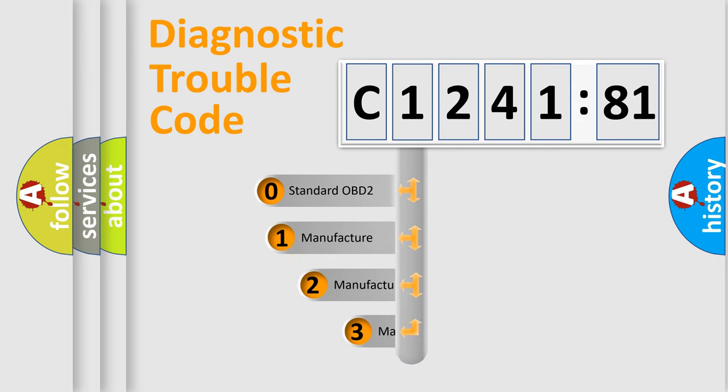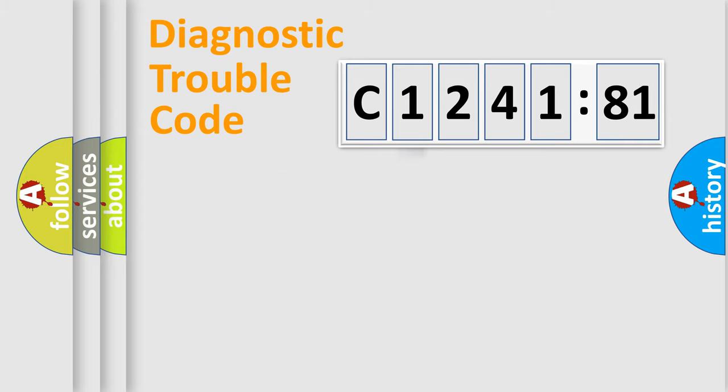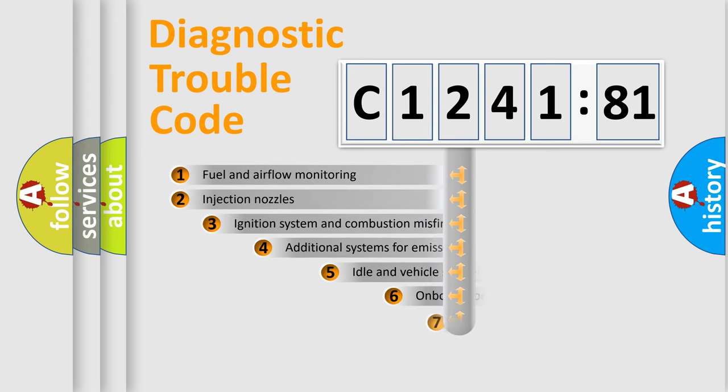The third character specifies a subset of errors. The distribution shown is valid only for the standardized DTC code. Only the last two characters define the specific fault of the group.